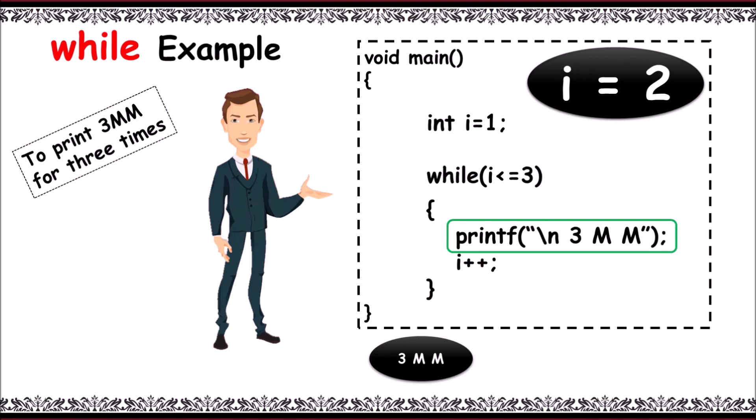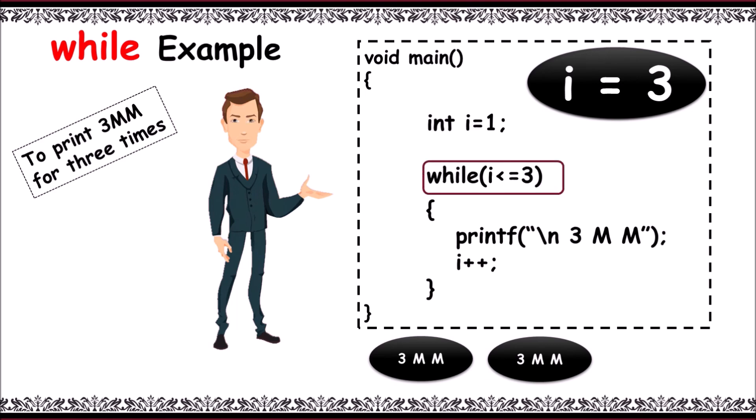And i is incremented again. Now value of i will be 3. Again condition is verified: i less than or equal to 3, that is 3 less than or equal to 3 is true. 3mm is printed for the third time and then i value gets incremented again. Now i is equal to 4.